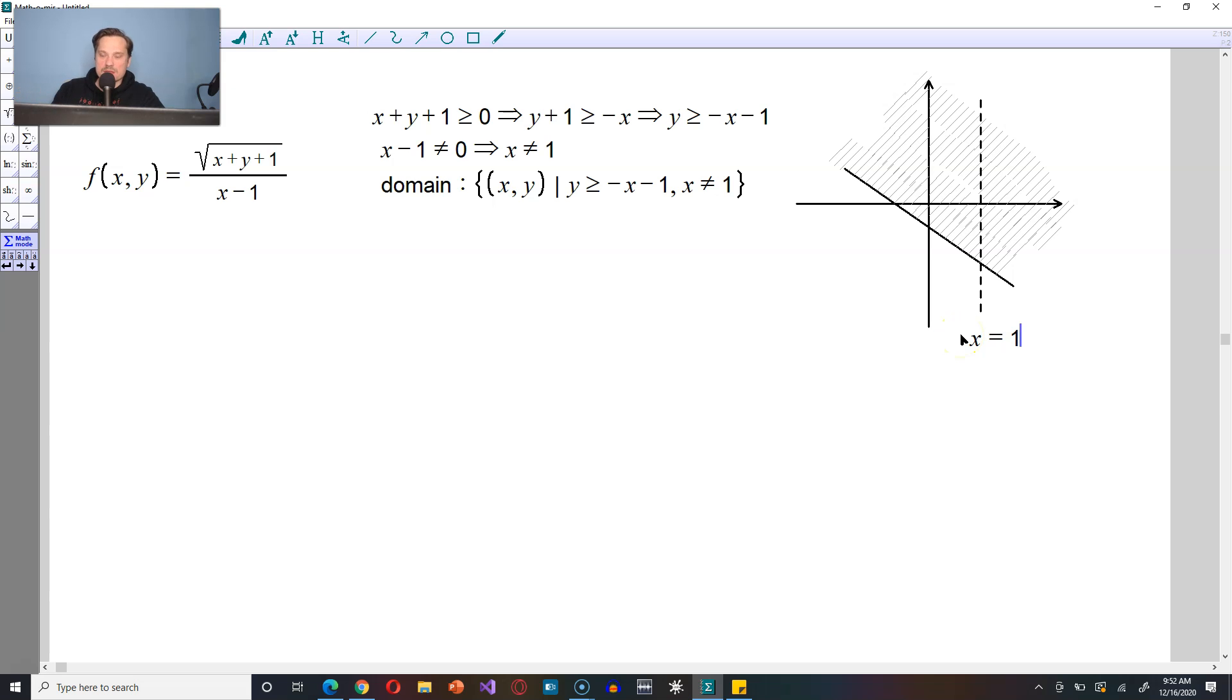Any point on the line cannot be used in the domain. Any point in the rest of it, the shaded region above the line and off x equals 1, can be used in the domain.